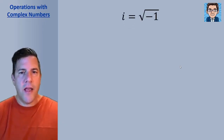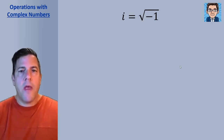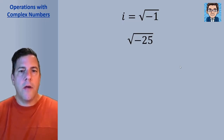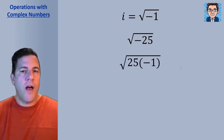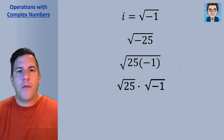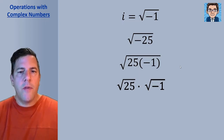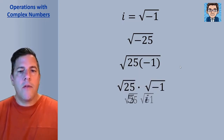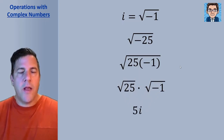i is defined as the square root of negative 1 — i standing for imaginary. What that allows us to do is take the square root of something like negative 25. We can split up negative 25 into 25 and negative 1, then into the square root of 25 and the square root of negative 1. The square root of 25 is 5, and the square root of negative 1 is i, so the answer becomes 5i. This allows us to take the square root of a negative number.